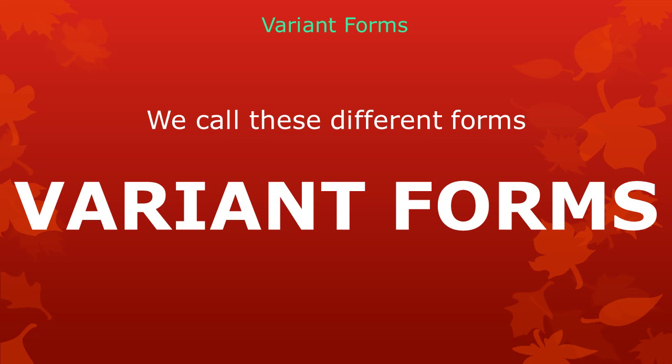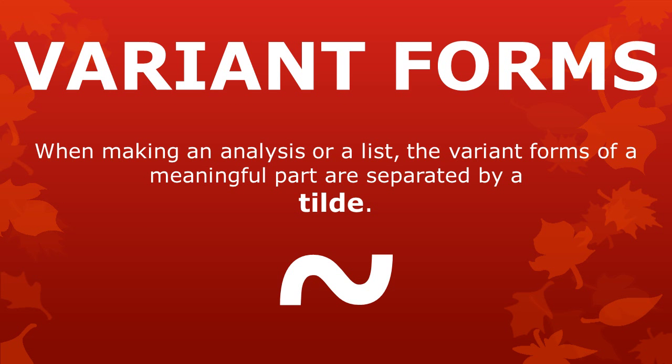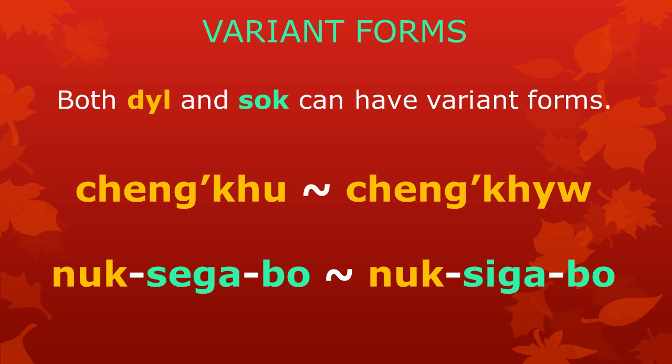When we make an analysis of a language or a list of meaningful parts, like in a dictionary, the variant forms are separated by a tilde — the curly symbol at the bottom of the screen. Both del (roots) and sok (bound parts) can have variant forms.